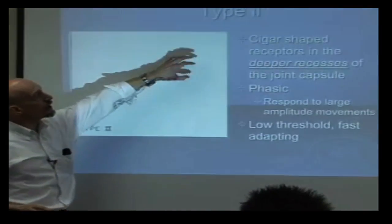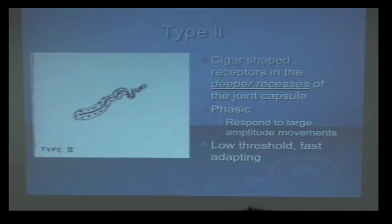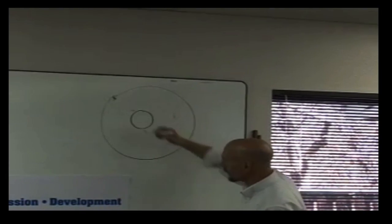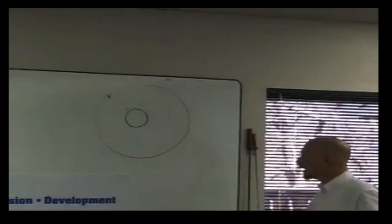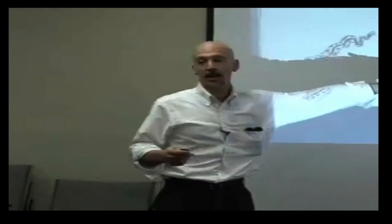Alright, type 2. These are cigar shaped in the deeper layers of the joint, so they're down further. It takes much more movement to get them to do anything, much more movement. So they're low threshold, but they adapt very quick and they're phasic.